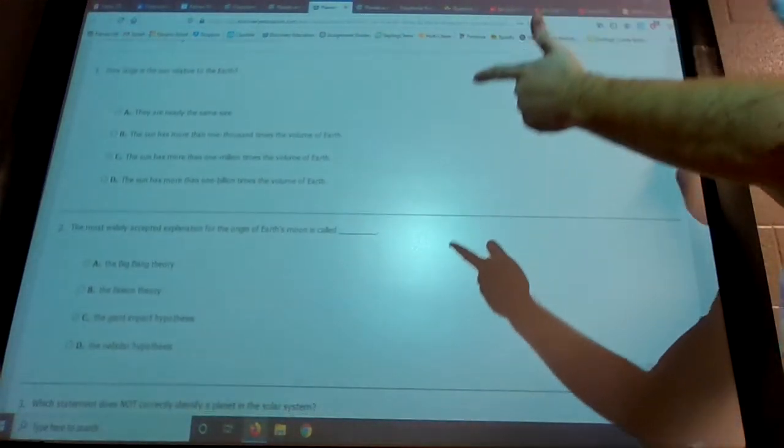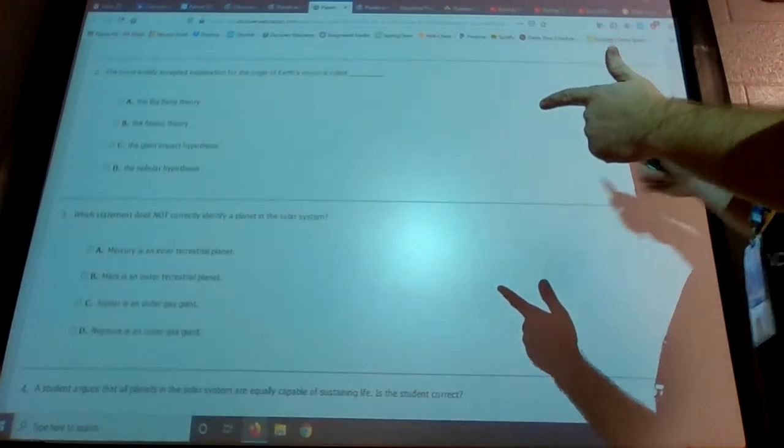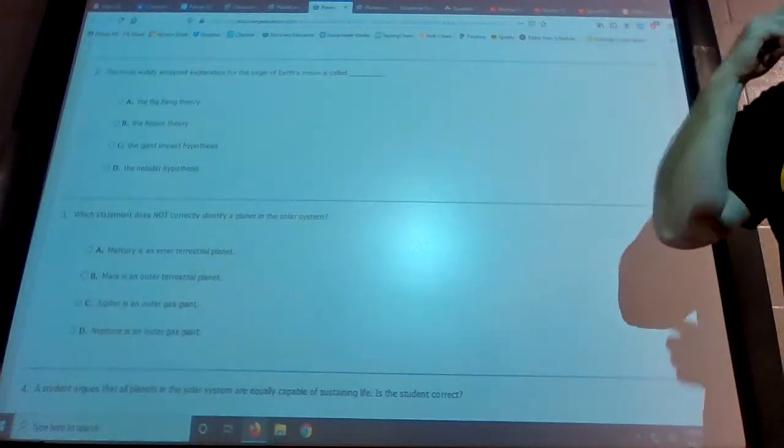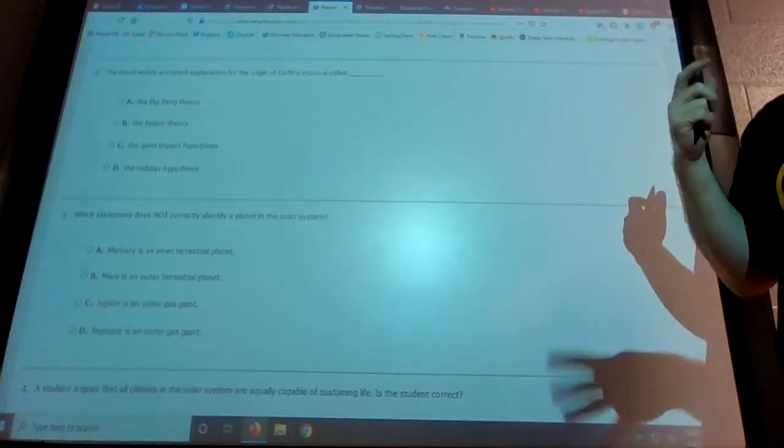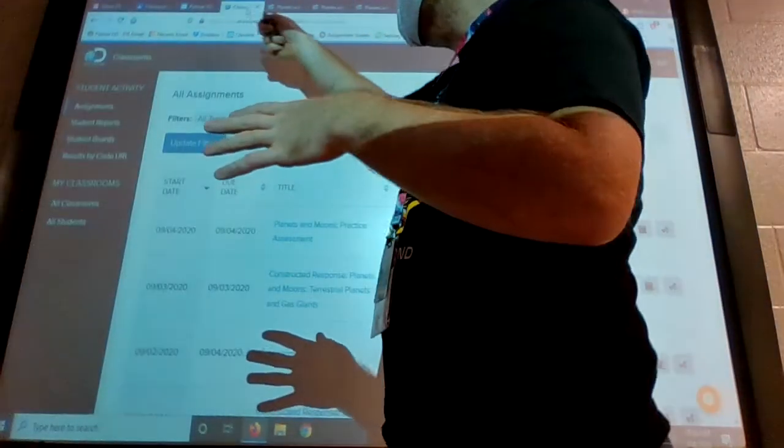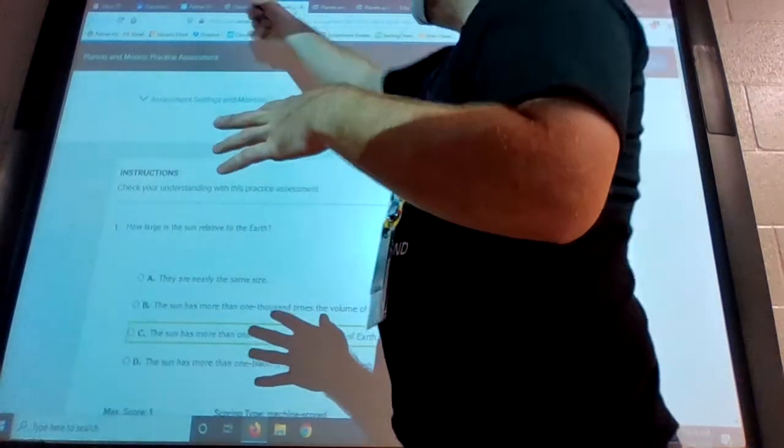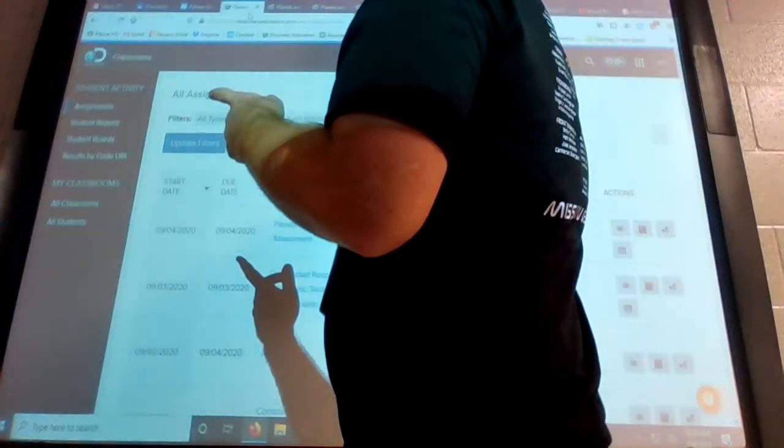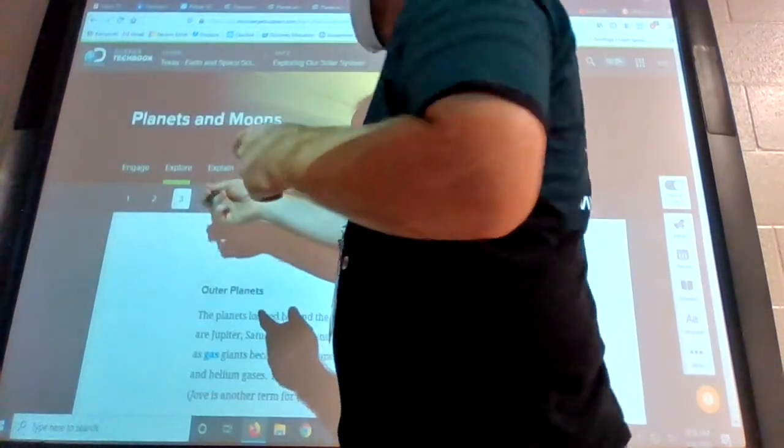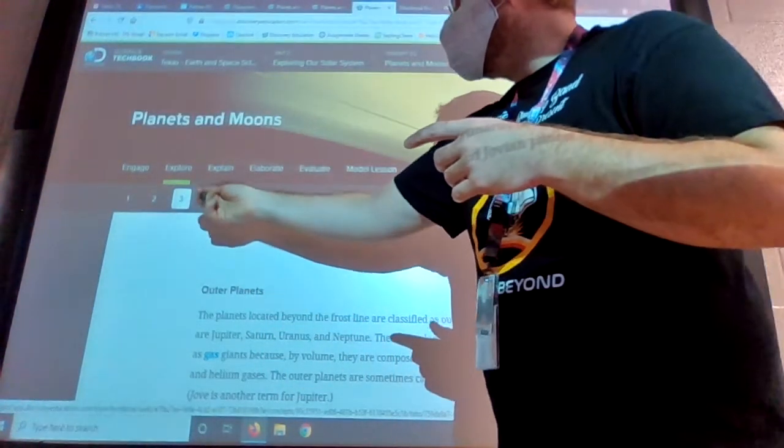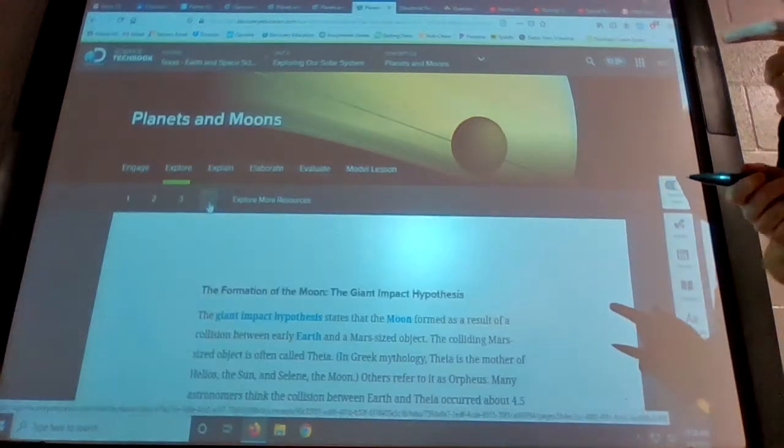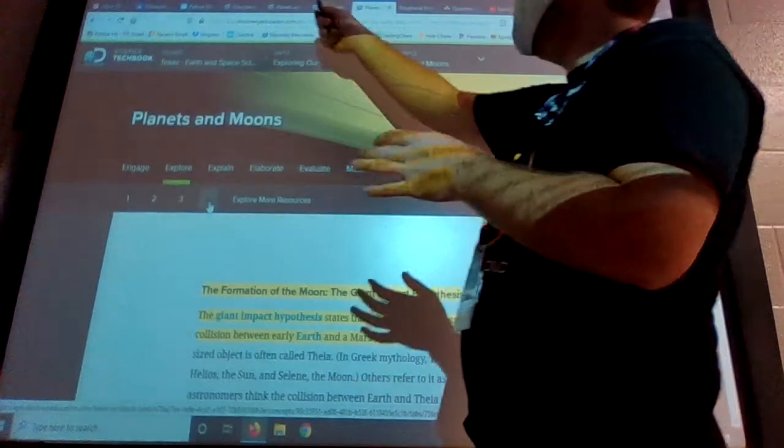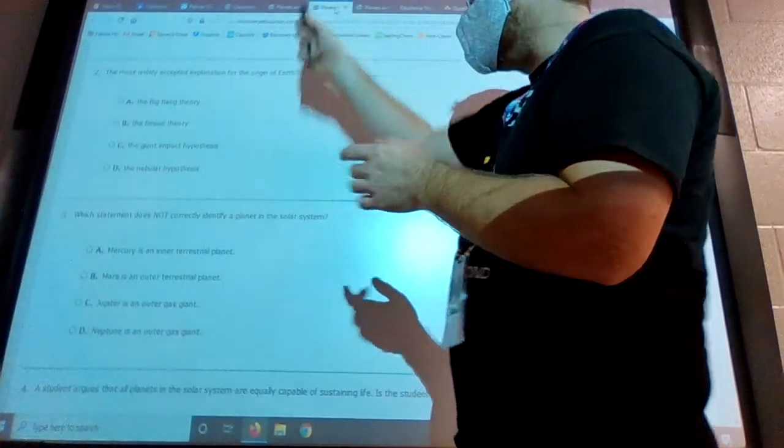So they ask about the size of the sun, the most widely accepted explanation for the origin of Earth's moon. That was on the last page, page four. So if you come back over here. So if you go to number four here, it will talk about the formation of the moon. And they tell you the name of the hypothesis there.